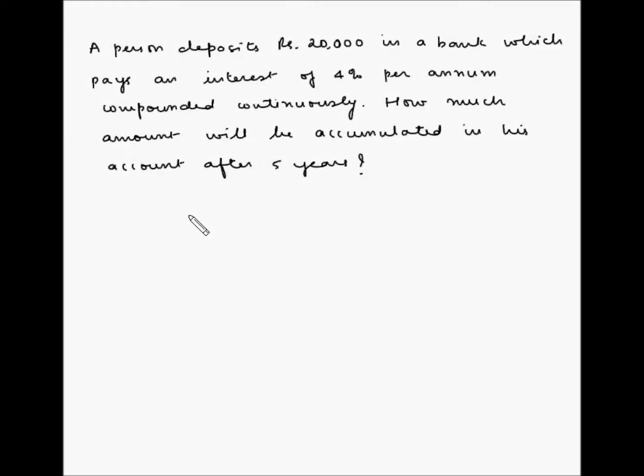A person deposits rupees 20,000 in a bank which pays an interest of 4% per annum compounded continuously. How much amount will be accumulated in his account after 5 years? So here, a person is depositing an amount of rupees 20,000 in a bank for a tenure of 5 years.